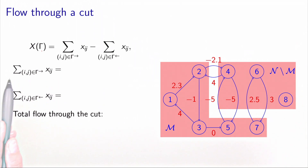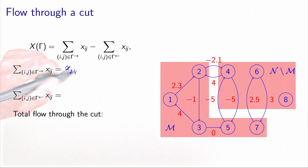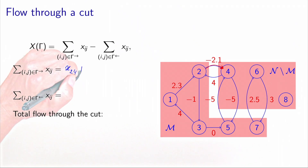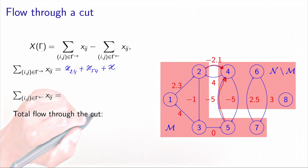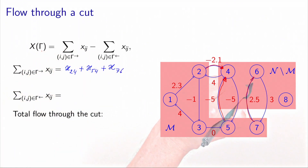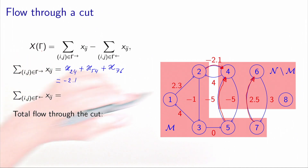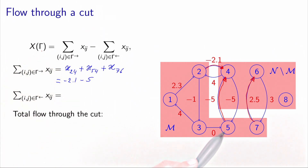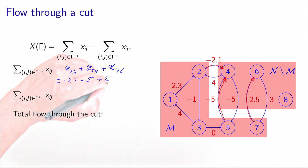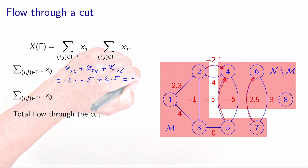Let's calculate on this example. The set of forward arcs on the cut are arc (2,4), arc (5,4), and arc (7,6). The total for the forward arcs is: minus 2.1, which is the flow on arc (2,4), minus 5, which is the flow on arc (5,4), plus 2.5, which is the flow on arc (7,6). So the total is minus 4.6.